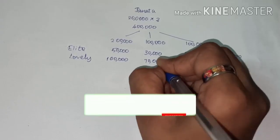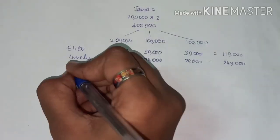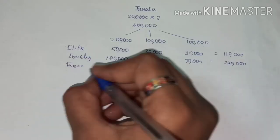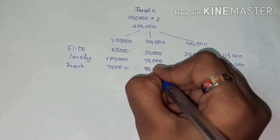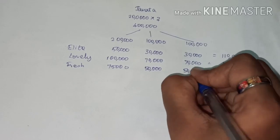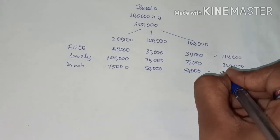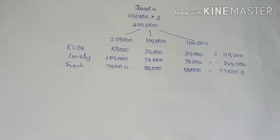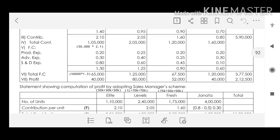For Fresh: base sale of 75,000, plus 50,000 and 50,000 for each 1 lakh increase in Janita, giving a total of 1,75,000. Then put in the number of units as calculated. The contribution per unit already calculated is: A Light ₹2.1, Lovely ₹2.05, Fresh ₹1.6, and Janita ₹0.8.